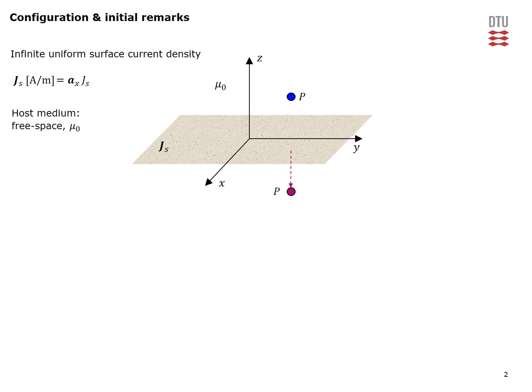The objective is to get the field in the upper half space at this observation point and also in the lower half space at this observation point down here. We have already introduced this rectangular XYZ coordinate system so the observation point will have these coordinates. Alternatively you can pick up the observation point through this position vector.